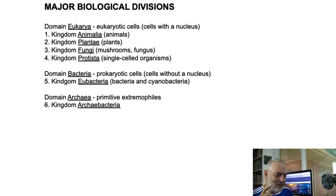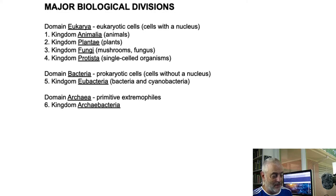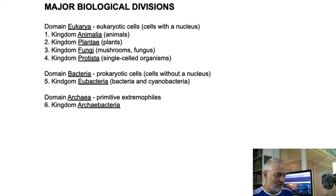In the domain Eukarya — meaning eukaryotic cells with a cell nucleus — we have four kingdoms: Animalia, Plantae, Fungi, and Protista. The other domain is Bacteria, which includes Eubacteria such as regular bacteria and cyanobacteria. There's also the domain Archaea, which are what we call archaebacteria or ancient bacteria. So there are six kingdoms to pay attention to: animals, plants, fungus, protists, eubacteria, and archaebacteria.